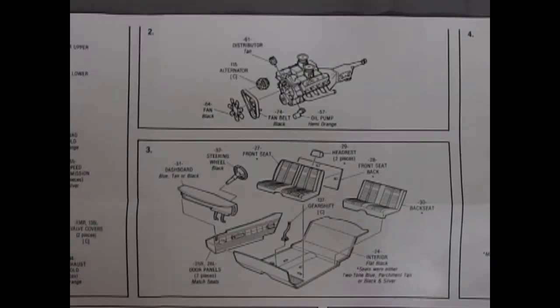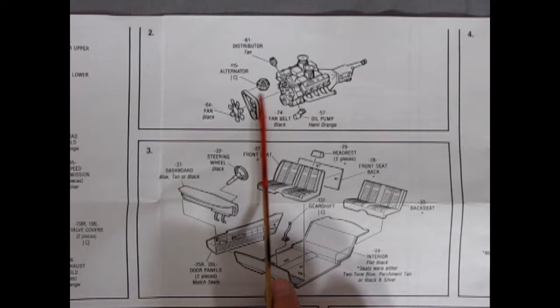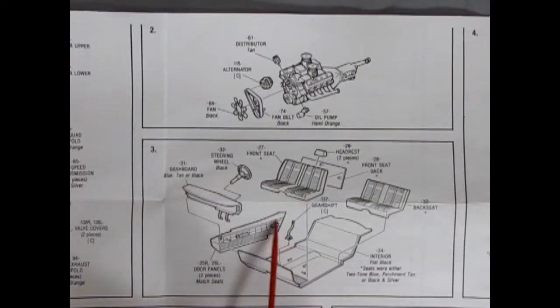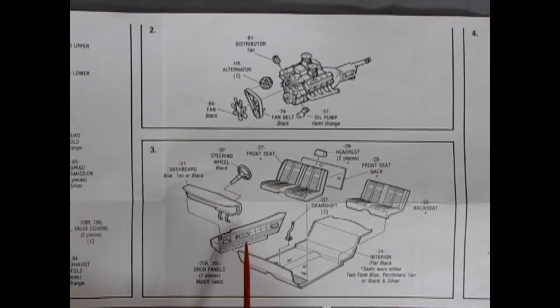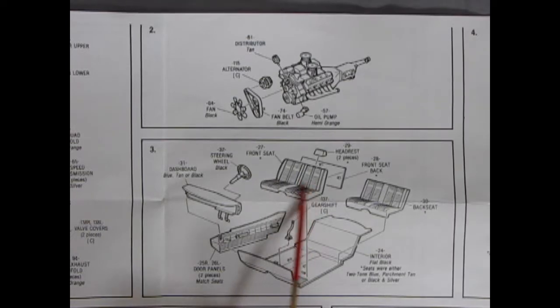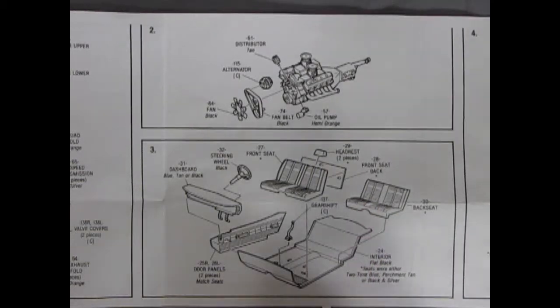Moving over here we've got the rest of the engine going together with the fan belts and the fan, the alternator, the distributor and the oil pump, as well as our interior going together. The dashboard, separate side panels which are always nice, the bench seat with the front and back, and you also get these headrests you can put on there and the rear bench seat as well.